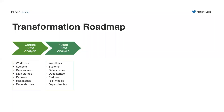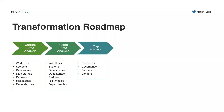In the second step, we map a future state analysis based on exactly similar factors: workflow systems, data sources and storage, partners, risk models and dependencies. We map out that future state for the organization. Based on these two steps, we then have a gap analysis step where we identify all the resources necessary for the transformation, the governance structure that has to be in place, and all the partners and vendors that should come into the picture for this transformation roadmap.